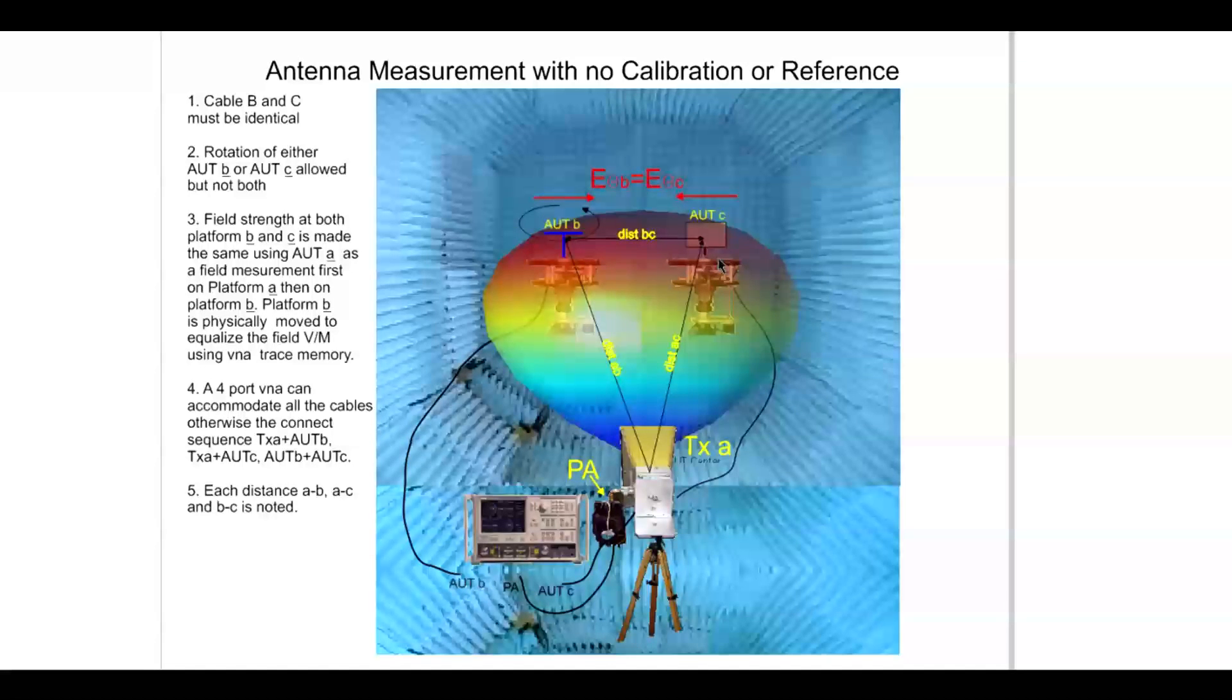Another option would be to repoint the horn, or AUT A, right or left until the field strengths are the same. In fact, this is a calibration method for calibrating differences in ripple inside of the chamber.